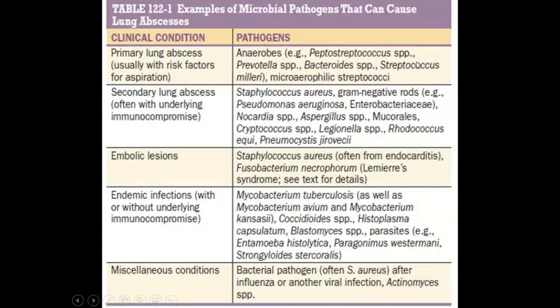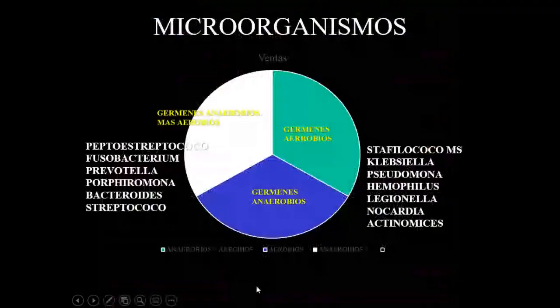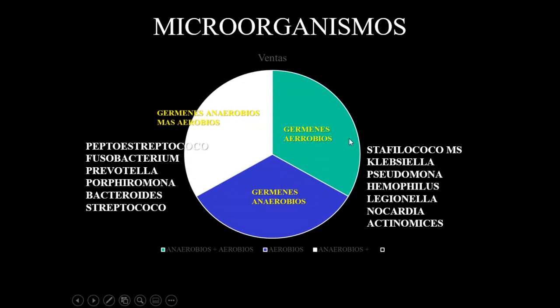En resumen, los microorganismos que más afectan son aerobios, anaerobios e infecciones mixtas. Entre aerobios: estafilococos, Klebsiella, Salmonella, Enterococcus. Entre anaerobios: Peptococcus, Fusobacterium, Porphyromonas, Bacteroides. Son gérmenes que requieren tratamiento antibiótico agresivo por 6 a 8 semanas dependiendo de la evolución.